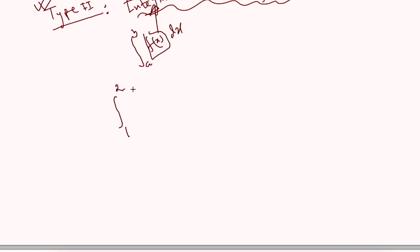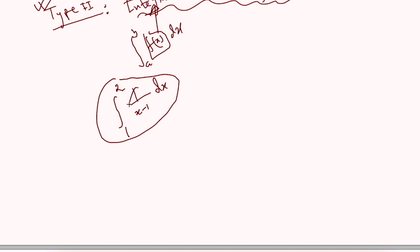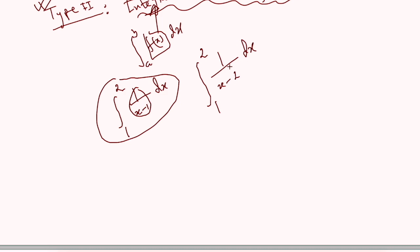For example, the integral from 1 to 2 of 1 over (x minus 1) dx is an improper integral of Type 2, because the integrand is infinity at its lower limit — if you put 1 into the function it gives 1 over 0, meaning the integrand is discontinuous at its lower limit. Another example is from 1 to 2 of 1 over (x minus 2) dx, which is also Type 2 because the integrand becomes infinity at its upper limit.